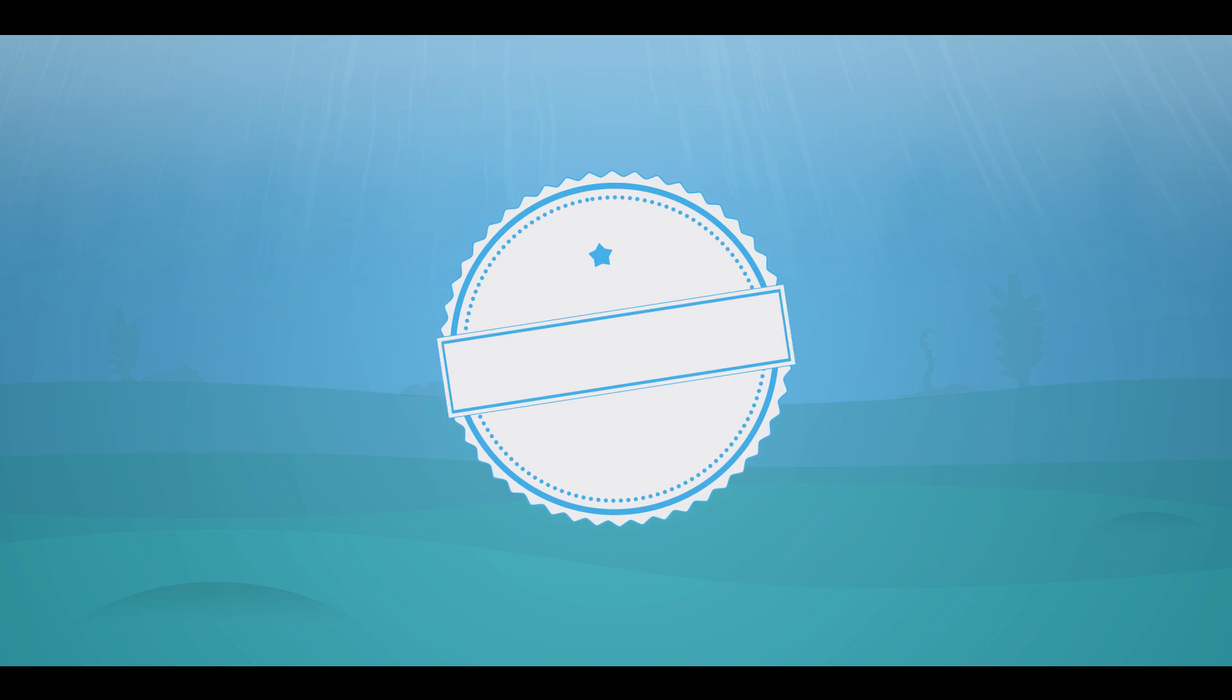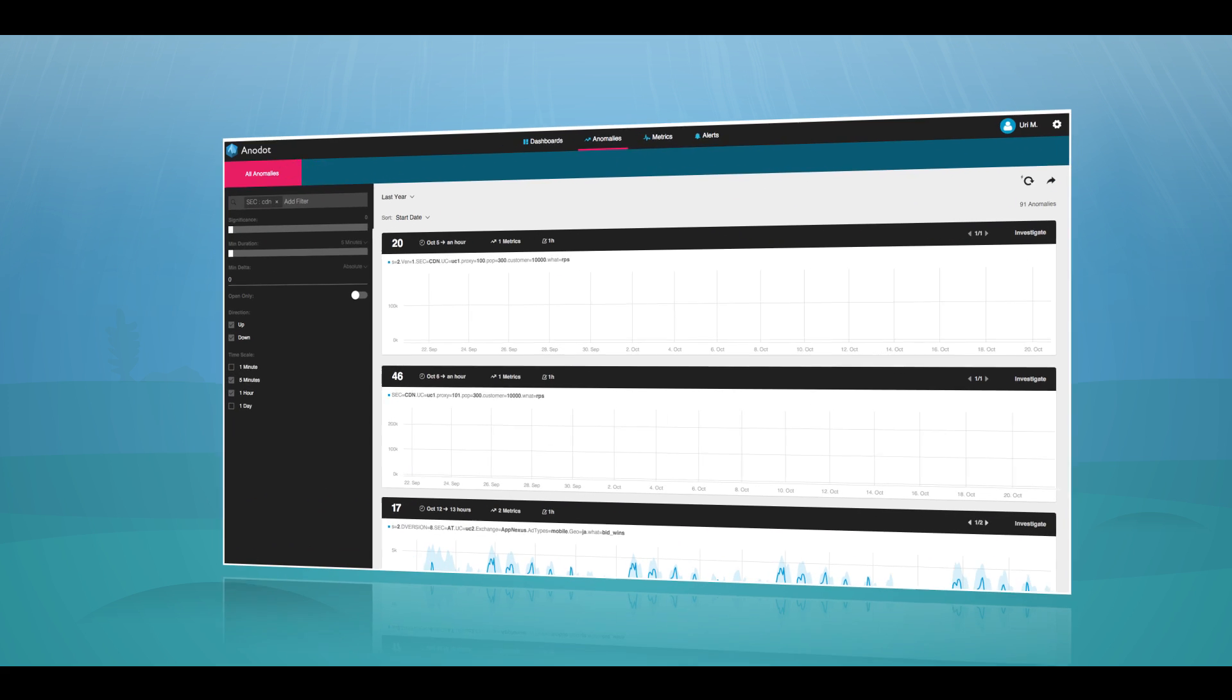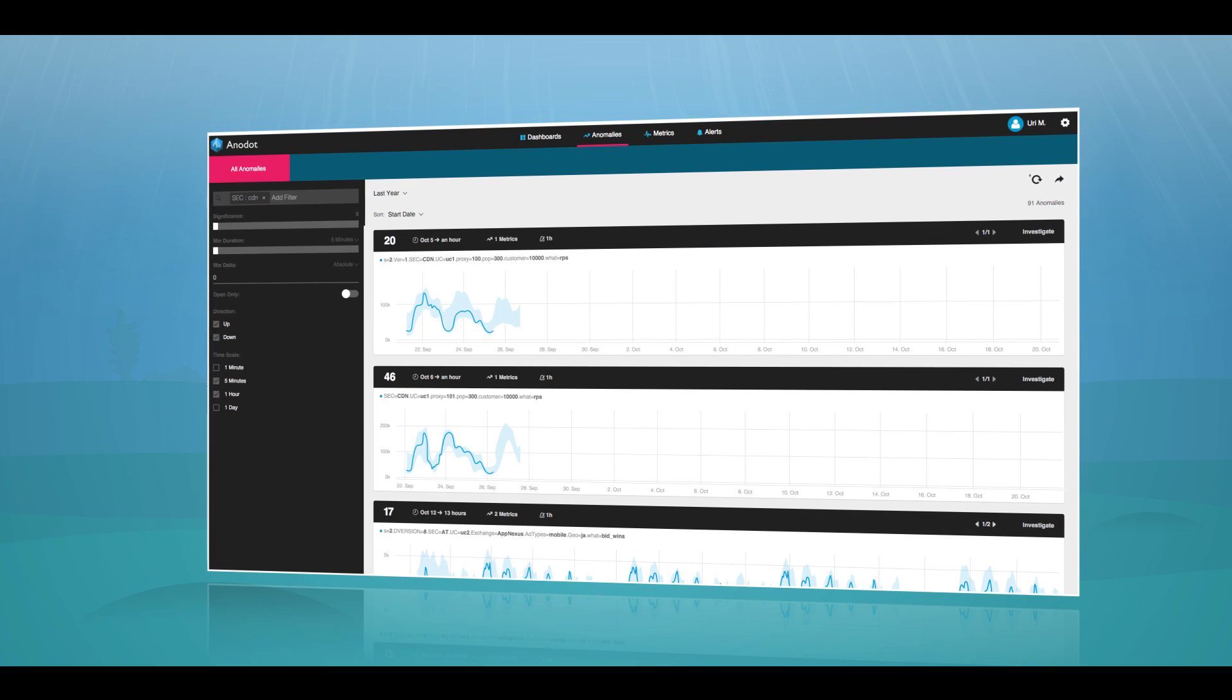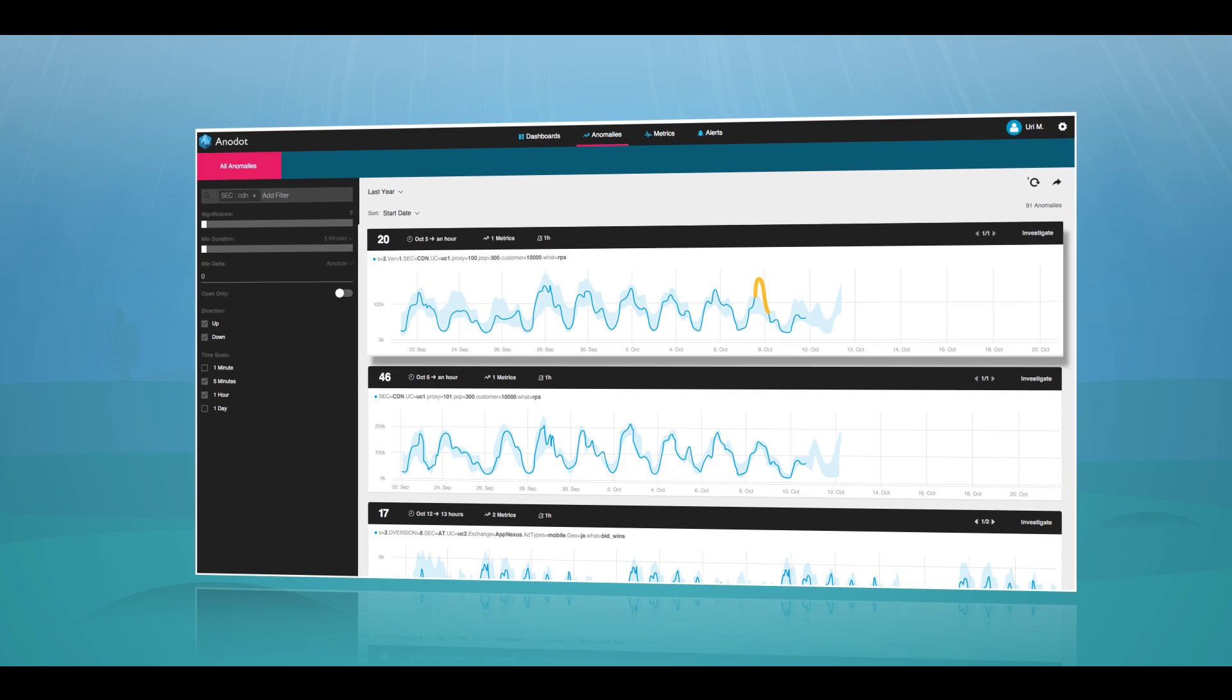Using patented machine learning algorithms, Anadot automatically learns your data's normal behavior and then identifies any deviations in real time.